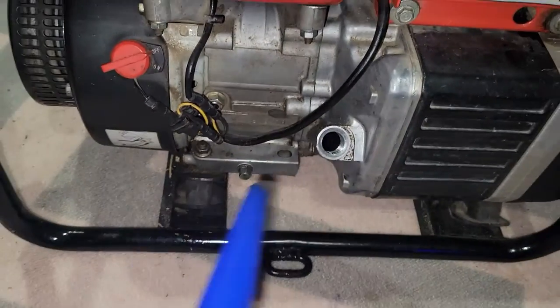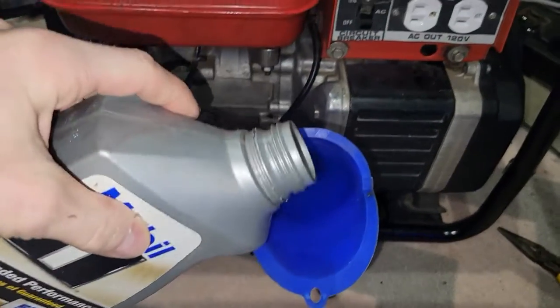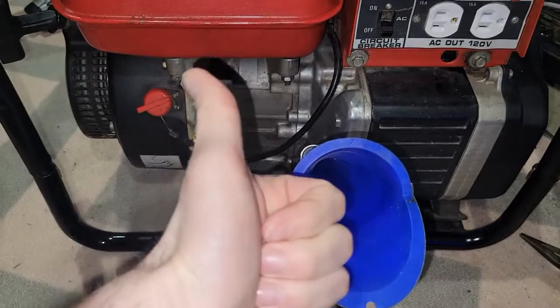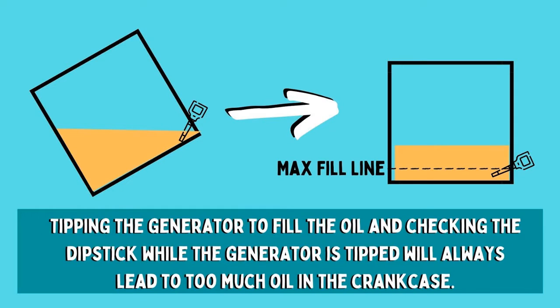The problem with that is the dipstick is now up in the air instead of down below. When you pour the oil in that way, it rests along the opposite wall of the generator rather than the bottom, so it has to fill up the opposite wall and the bottom to reach the dipstick. When you think everything's fine and lower the generator down, all that oil that was on the far wall sloshes back over — and now it's raised way above the max fill line. You've increased the pressures inside your crankcase.